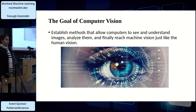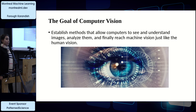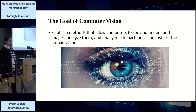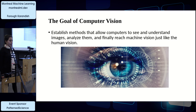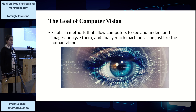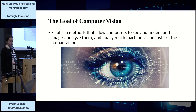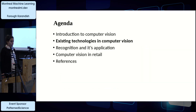But how about computers? Can they understand who is in a picture, their feelings, and extract that information? Based on this, the goal of computer vision is to establish methods that allow computers to see and understand images, analyze them, and finally reach machine vision just like human vision.